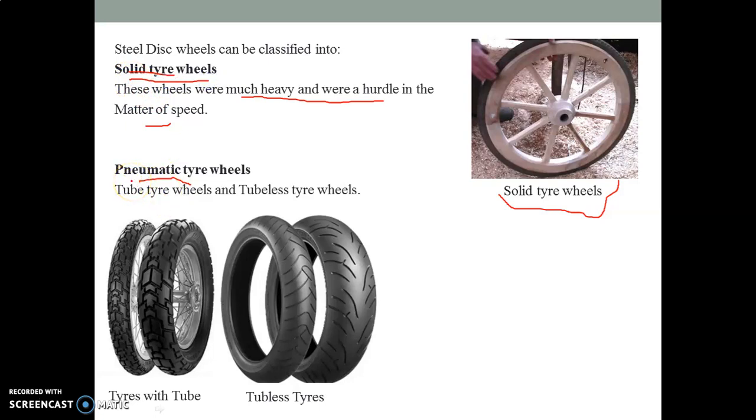Then, the next type is pneumatic tire wheels. In day-to-day life, we are observing some of the wheels, some tire wheels with tubes and some tubeless tire wheels. In the case of pneumatic tire wheels, air is used as media between the tire tube and rim to cushion road shocks. These wheels are much lighter than the solid tire wheels. All the modern vehicles are equipped with these types of wheels, whether they are wire-spoke wheels or steel disc wheels.